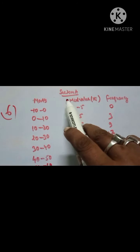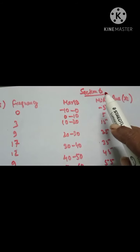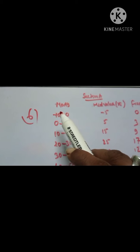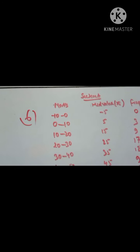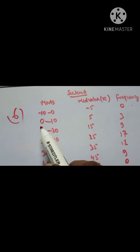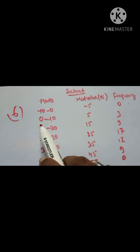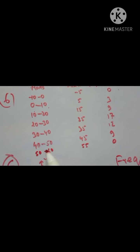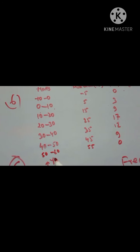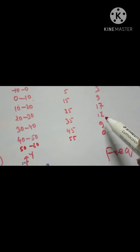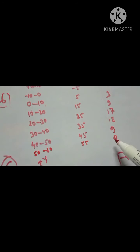The question gives us Section A and Section B. In Section A, the columns are marks and frequency. The class intervals given are 0 to 10, 10 to 20, 20 to 30, 30 to 40, 40 to 50, and 50 to 60. The frequencies given are 3, 9, 17, 12, 9, and 0.